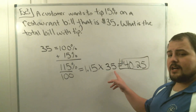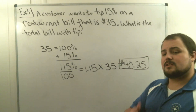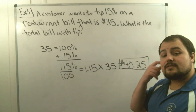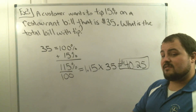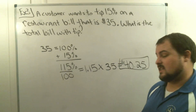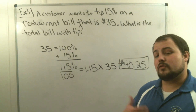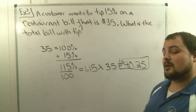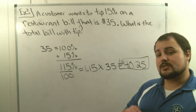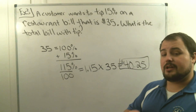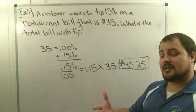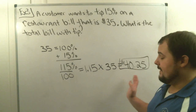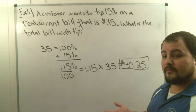So $35 plus $5.25 equals $40.25 — the waiter is getting a $5.25 tip on that bill. Again, like with taxes, we add the tip to the 100% cost, and that's one of the easier ways to solve this.